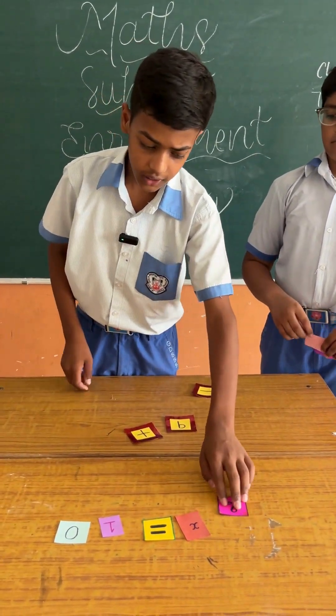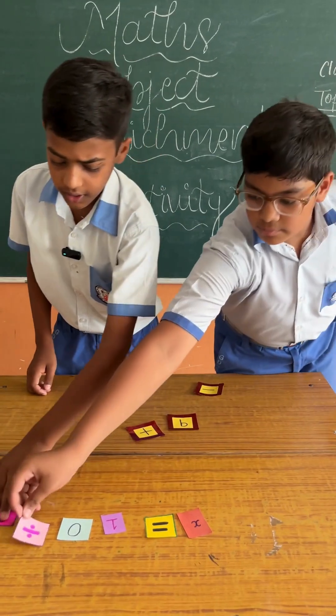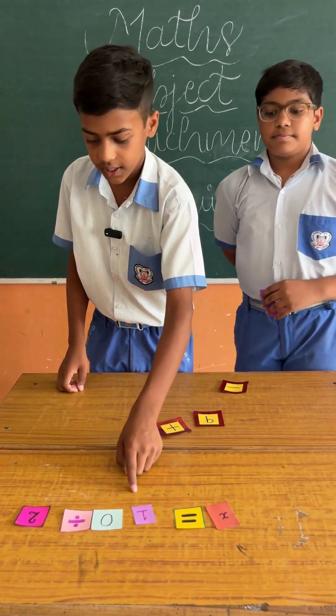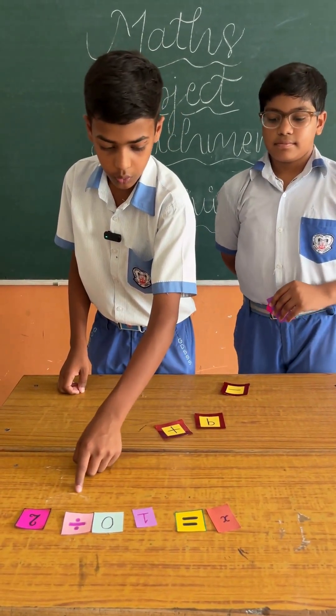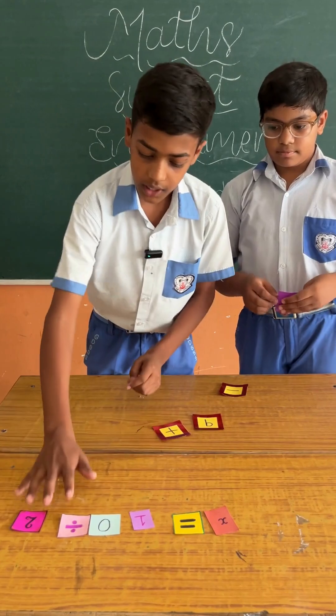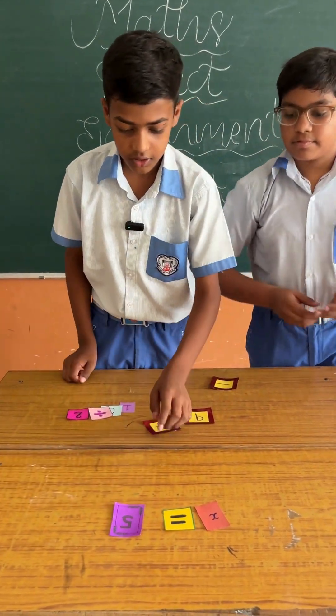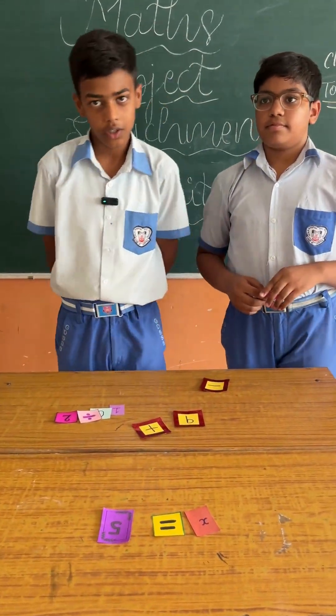Now we transpose the 2 to the right hand side and the equation becomes x equals 10 divided by 2, which gives x equals 5. Thank you.